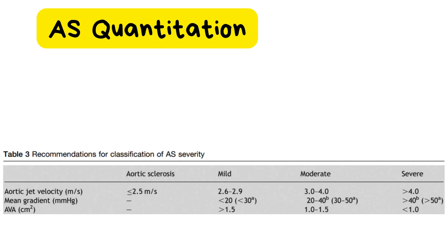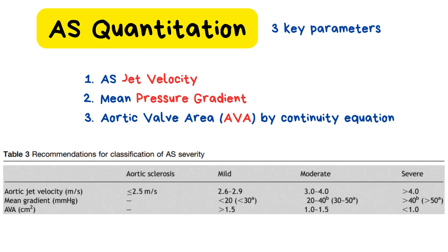Now that we've covered the causes, let's move on to quantifying aortic stenosis, because knowing how severe it is makes all the difference in management. Aortic stenosis severity is best described using specific numerical measurements, and the ASE recommends focusing on three key parameters: jet velocity, mean pressure gradient, and aortic valve area. These are the core indicators we rely on during echocardiographic assessment. We've included a table of these key parameters on screen.